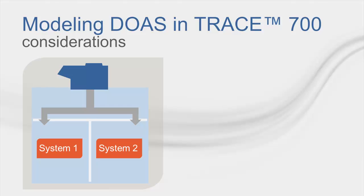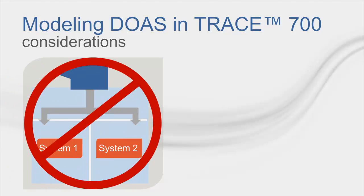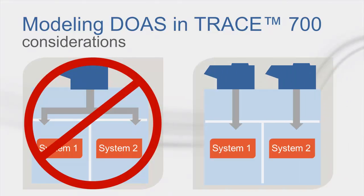Lastly, the DOA system cannot be shared among multiple systems. In order to condition outdoor air across several systems within your building model, if you are modeling a building that has a dedicated outdoor air unit serving several systems, the workaround is to create a separate dedicated outdoor air unit for each of those systems.